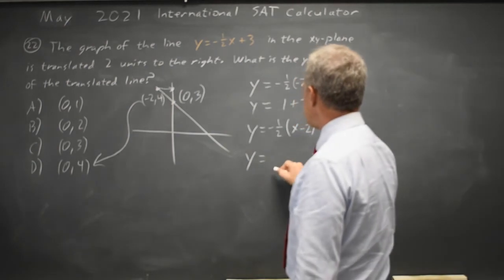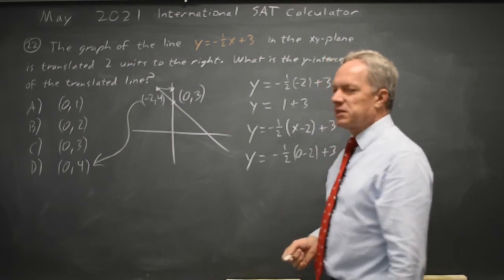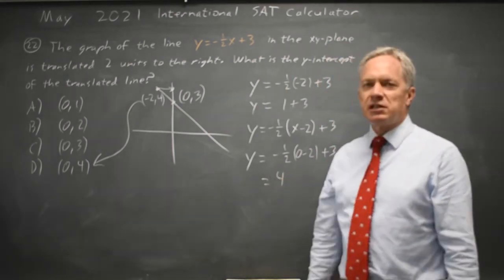The y-intercept occurs when x is 0, and that's exactly the same computation. Again, I get y equals positive 4, and choice d.